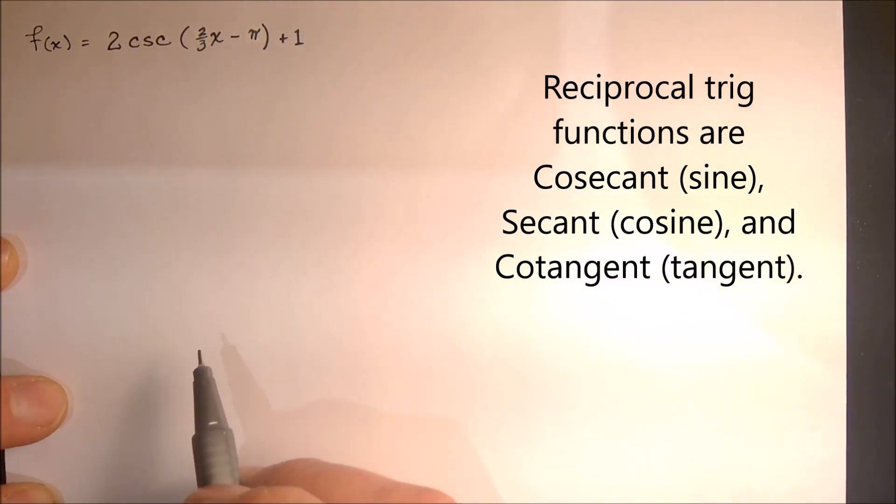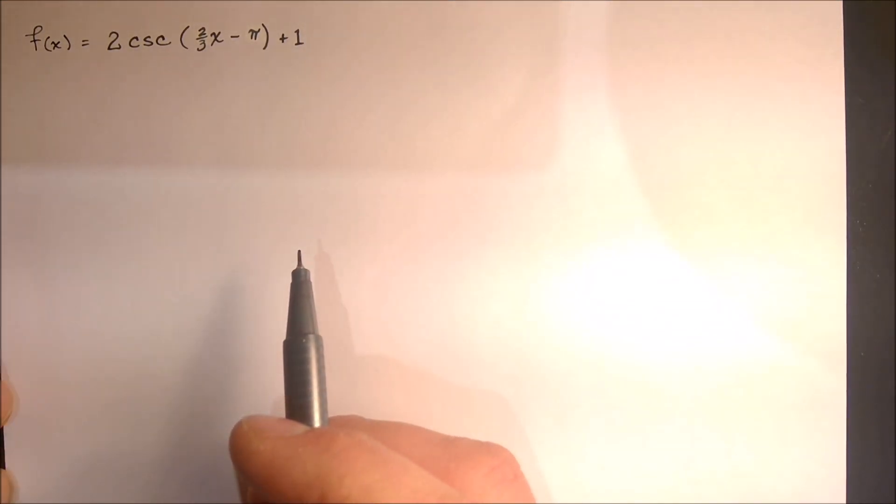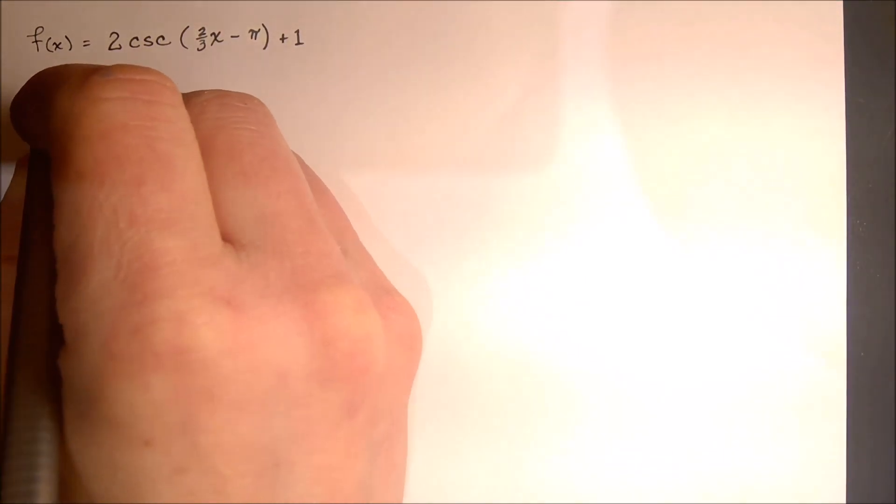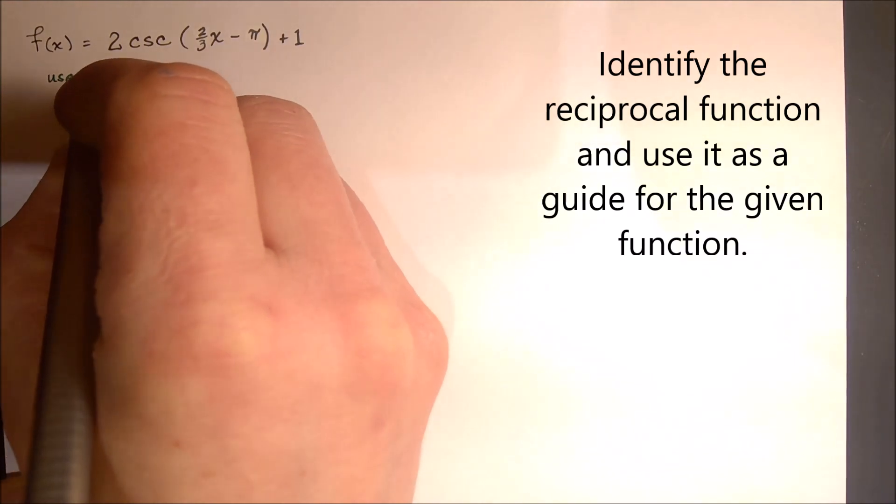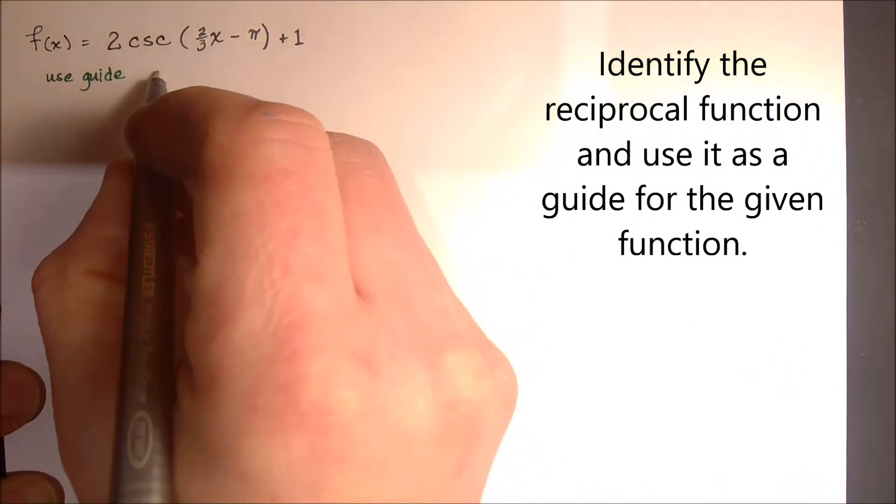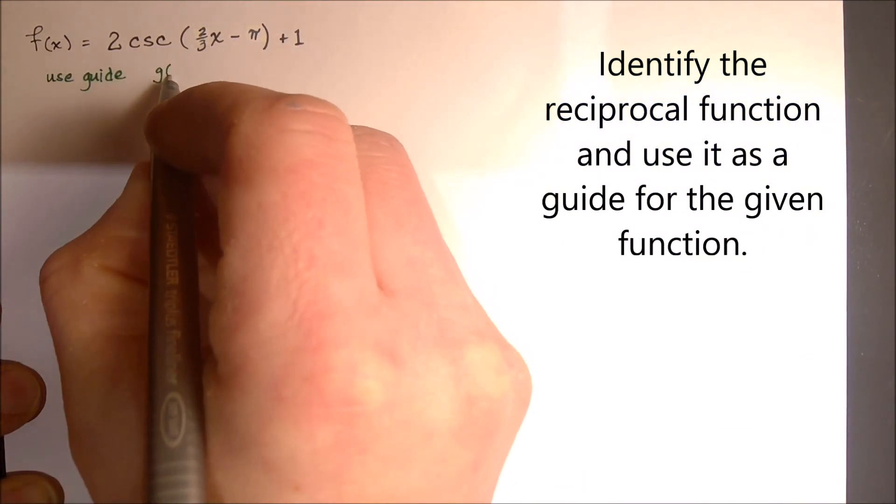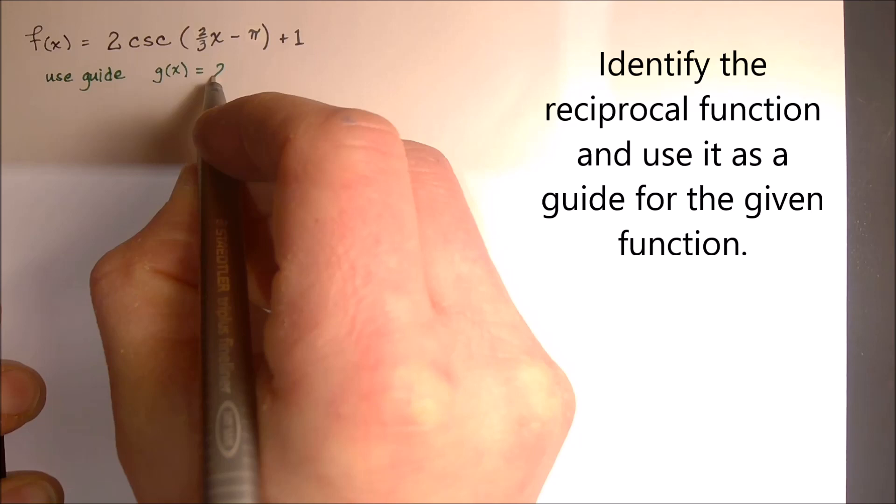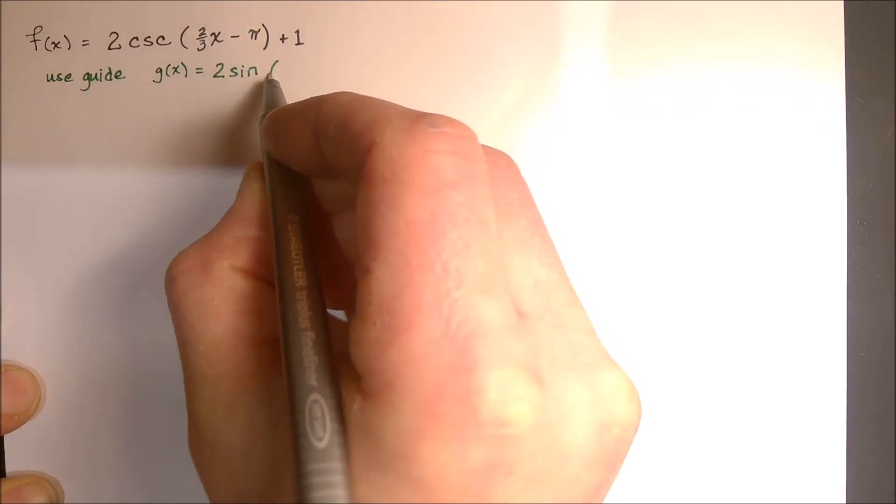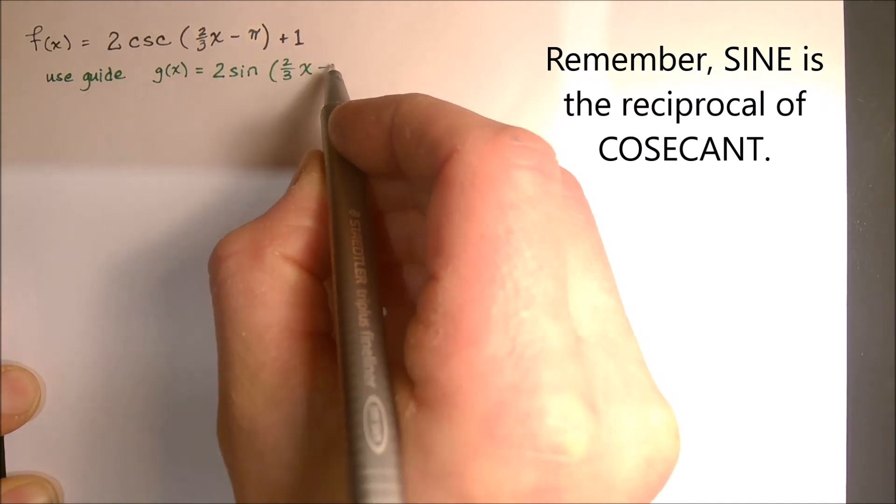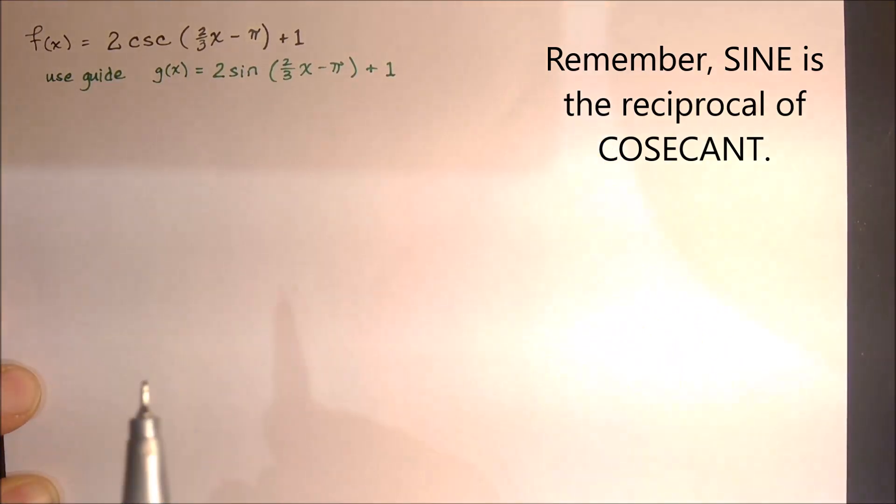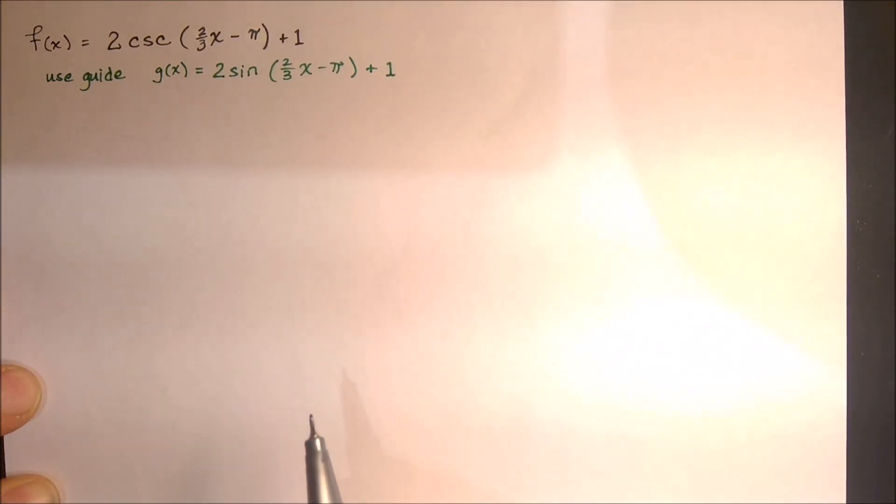So the very first thing I like to do when I recognize that it's a reciprocal trig function is let myself know I'm going to use a guide function. I'm going to use this function's reciprocal as a guide and I'm going to call that g(x) for guide function. That would just be 2 times the sine of, and I keep everything else the same. So what I'm doing is I'm looking at the reciprocal function since sine and cosecant are reciprocals of each other.